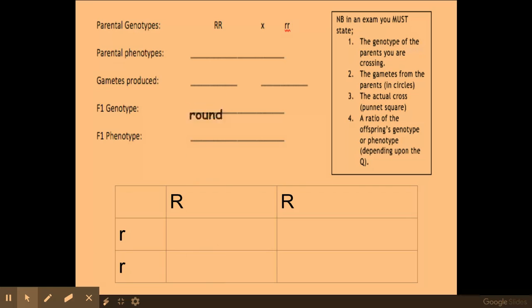The parental phenotypes here are round and wrinkled. In an exam this is what they are looking for. I've got the genotype at the top and I need to identify the gametes that are present. The gametes, in this case of a plant, would be the eggs and the pollen. The gametes produced from this individual I can only get a large R gamete, and from the wrinkled individual I'm only going to get a small r. That's the only gamete I could get.